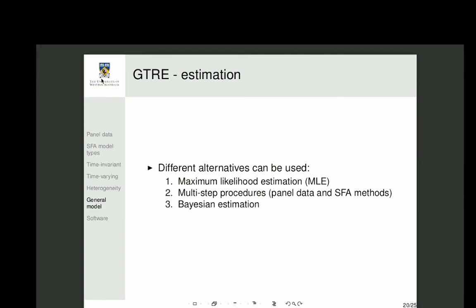Estimation of this general model can be done via maximum likelihood methods developed since 2011, now incorporated into recent versions of Stata. Multi-step procedures are also described in the Kumbhakar (2015) book, and Bayesian estimation approaches are also available, though this is a relatively new area.